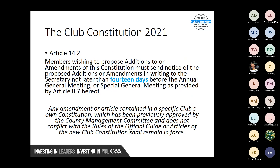Article 14.2: who can propose changes to the constitution? Any member of the club, provided they send notice in writing not later than 14 days before the AGM or special general meeting — previously it was 21 days, now it's 14 days. If the club management committee or executive wish to propose something for change at an AGM, it comes through the secretary to the members.